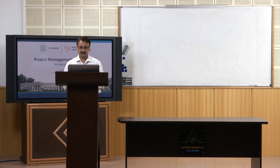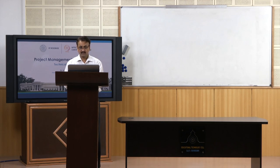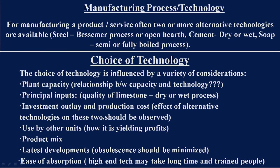Investment outlay and production cost are also considerations. Whenever you go for any technology, you need to invest in it and look at different sources of funds. When you choose a particular technology, it will either increase or decrease production cost. Generally, better technology decreases the cost of production. There is a close relationship between investment, production cost, and the technology you are choosing.